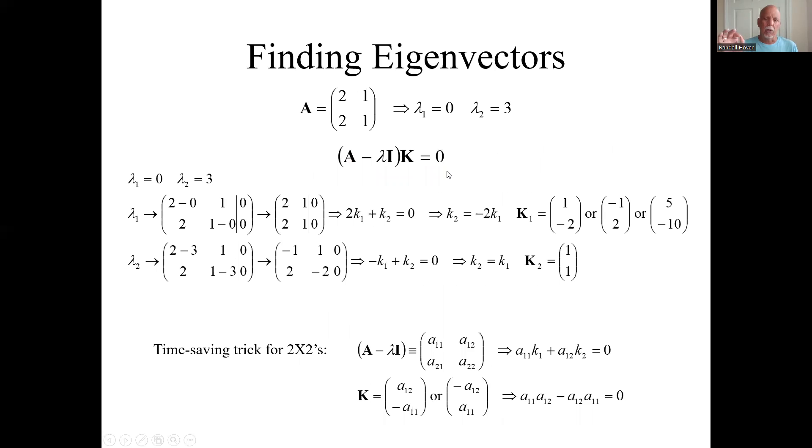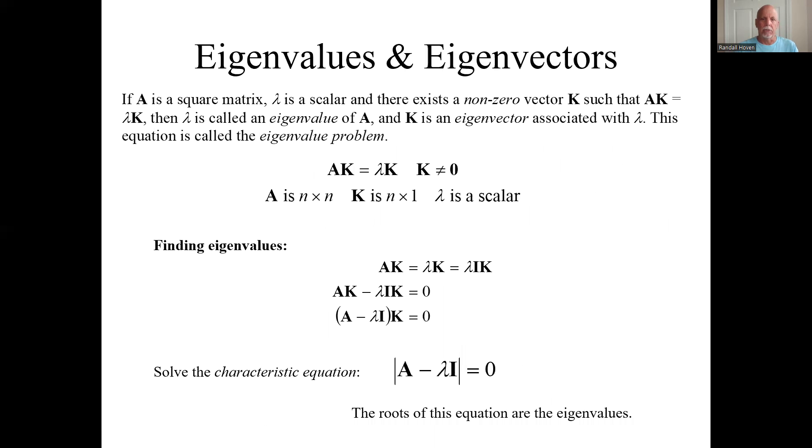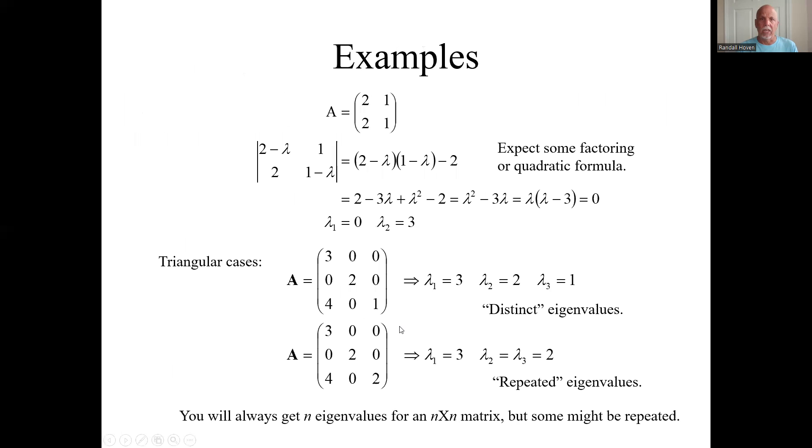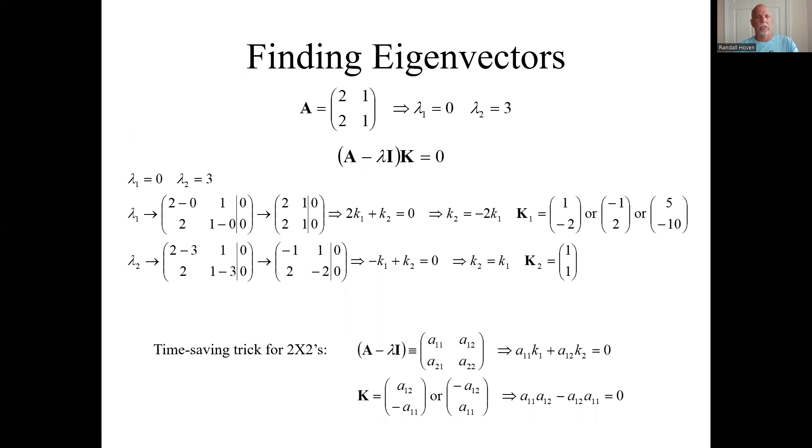And remember, going back just a couple of charts, if we get a non-zero K here, if we solve this, we're going to get an infinite number of solutions. So the K's are not going to be unique. We're going to get an infinite number of K's. Let's see what happens here. We just solved for the eigenvalues. Now let's see what happens when we solve the eigenvectors.